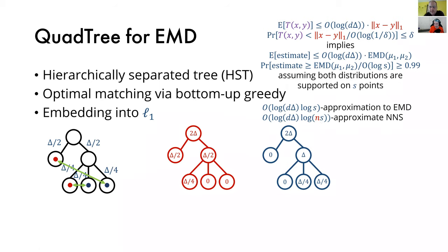Question from Mark: it looks like QuadTrees are used for nearest-neighbor calculations classically, but that doesn't scale well with dimension going to infinity. Would there be benefit to using locality sensitive hashing or similar to speed this up? Answer: Yes, absolutely — because you've embedded into L1, in L1 you can use whatever you want, including LSH. Even if you just use linear scan, linear scan with L1 is much, much better than linear scan with EMD. That's already an improvement.